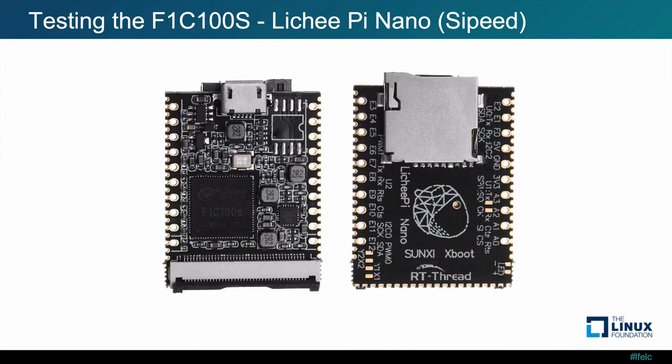In order to test the F1C100S, I found a development board by a company called Sipeed called the Lichee Pi Nano, produced for about $8 to $10. It includes the F1C100S as well as other important components such as SPI NOR flash and a backlight driver to power the backlight of the LCD. There is good community support for this board because it supports u-Boot, RT-Thread, MicroPython, and Linux. Although Allwinner does not provide these resources directly, there is a great community called the Sunxi community who has produced a lot of compatibility support for this chip and has ported u-Boot and Linux to this processor.